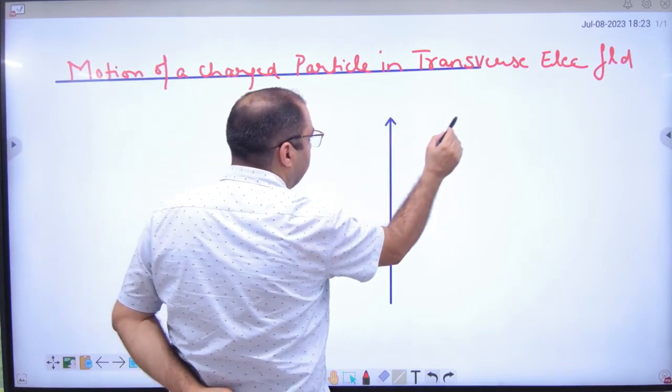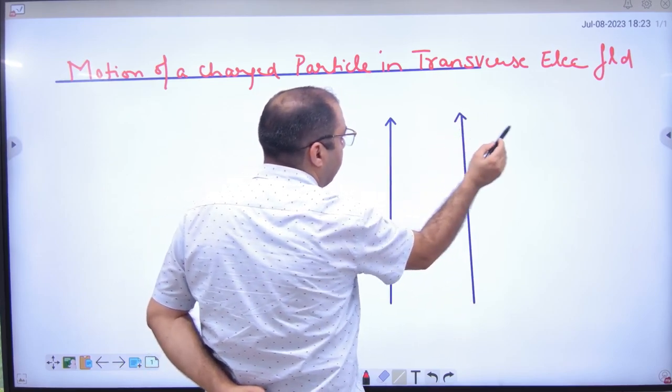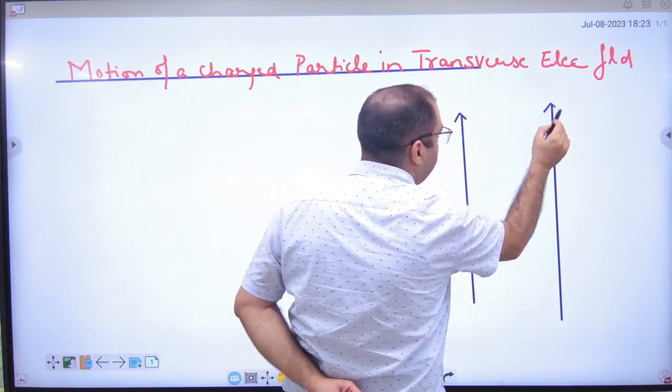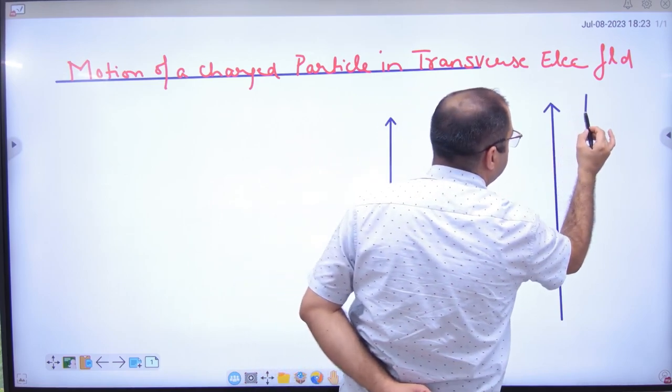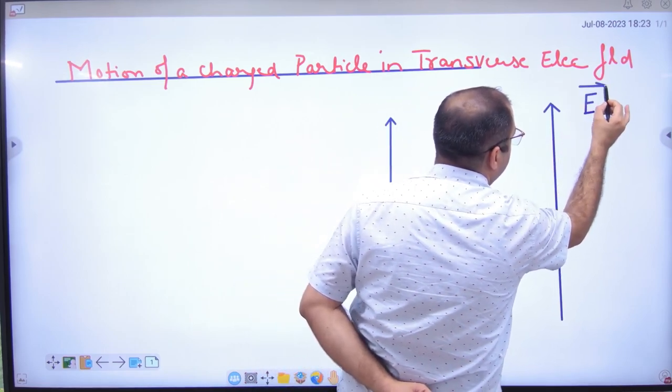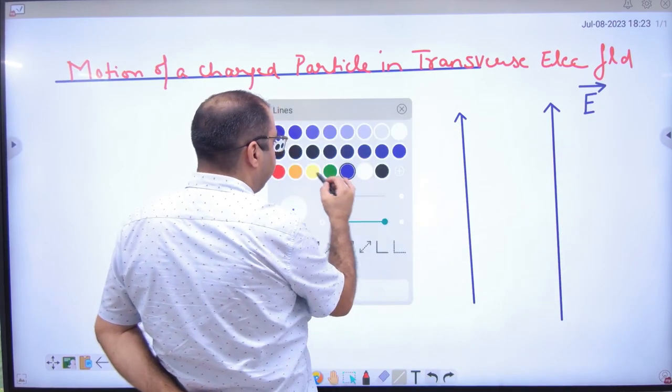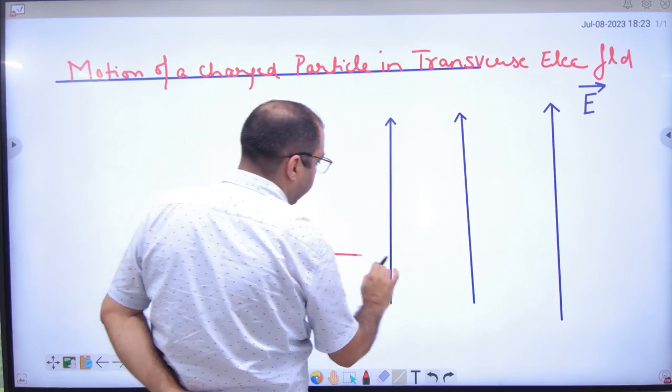If you have this electric field, the direction of the electric field is above, and a charged particle came like this.